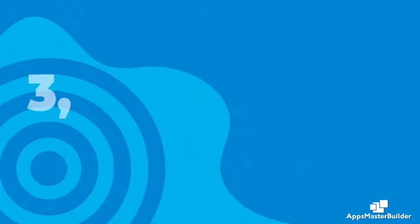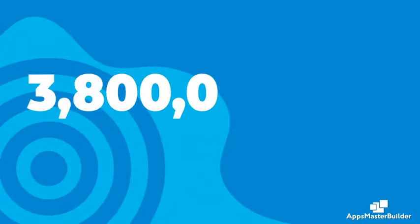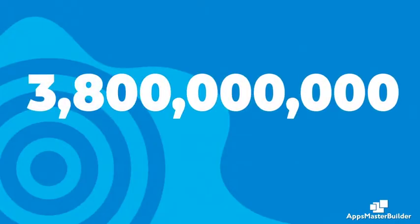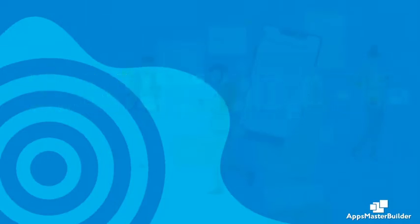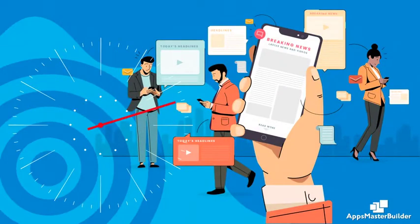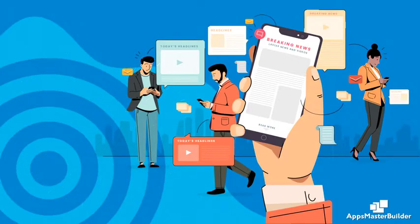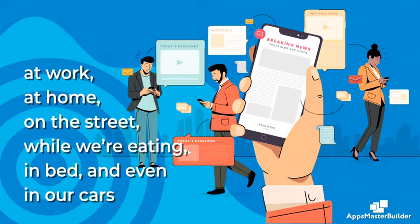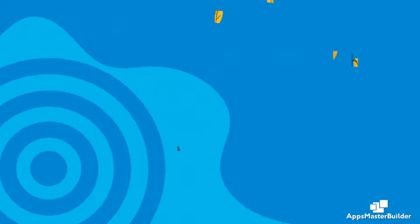Currently there are about 3.8 billion mobile users. In fact, studies show that the average person checks their phone every 12 minutes, and 10% of people check their phones once every four minutes. We use our phones at work, at home, on the street, while eating, in bed, and even in our cars.